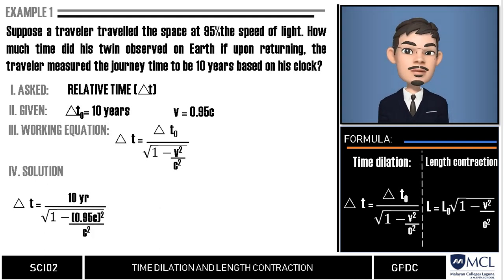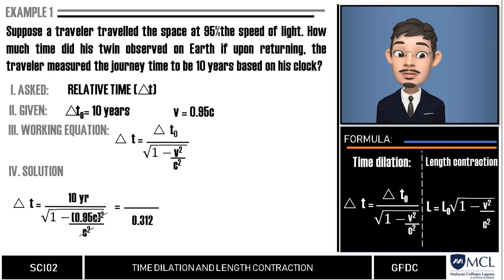If you are using a scientific calculator now, we can easily input these values and we will get the answer immediately. Or, we can perform the operations first in the denominator before we divide it from the numerator, which is 10 years. Here, our denominator is 0.312. And when we divide this from the numerator, 10 years, our final answer would be 32 years.